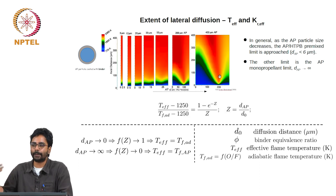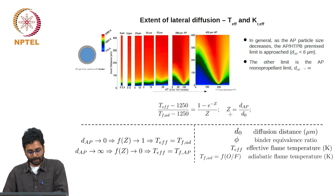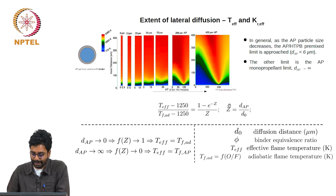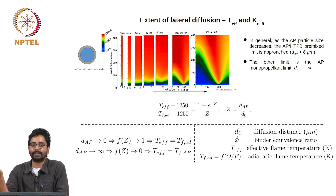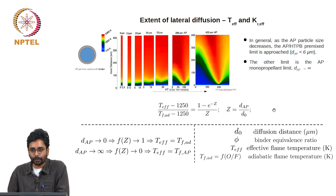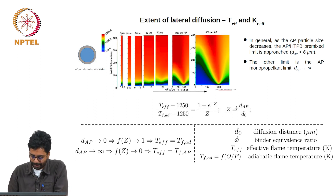This effect — that larger particles are controlled by a monopropellant flame and smaller particles by a premixed flame — is captured using a simple idea based on effective temperature. The functional form depends on the relative magnitude of the AP particle size in relation to the diffusion distance. The variable z is defined as the size of AP divided by the diffusion distance. As z goes to 0 you have premixed flame; as z goes to infinity you have AP monopropellant flame — and these limits are correctly captured by this functional form.